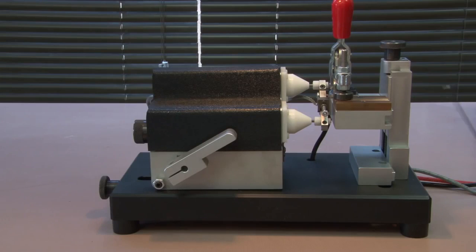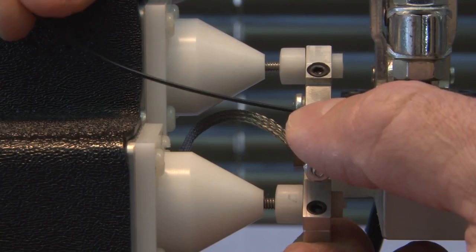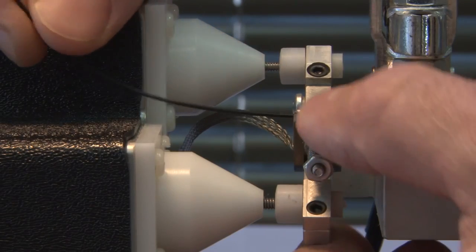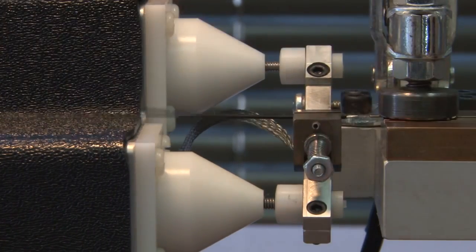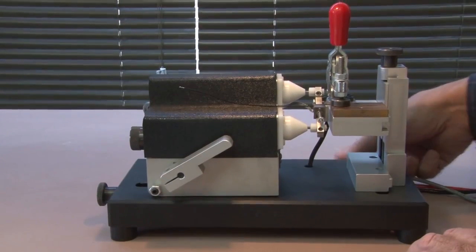We're going to weld that onto a 28 gauge stranded copper wire. We're going to put it in the movable wire holder and align them.